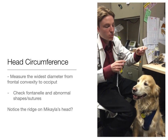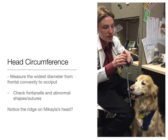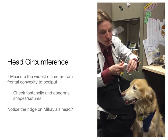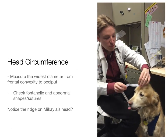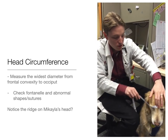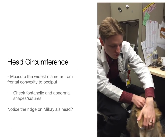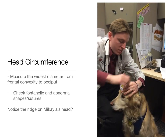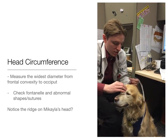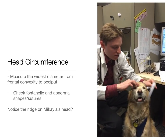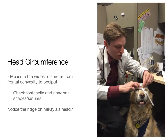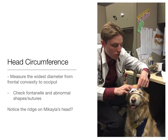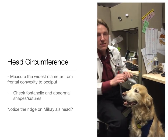Head circumference is an important part of the pediatric neurological exam. Essentially what you want to do is measure from the front of the forehead all the way back to the occiput, finding the greatest diameter, and then record that value and compare it to normal growth charts.